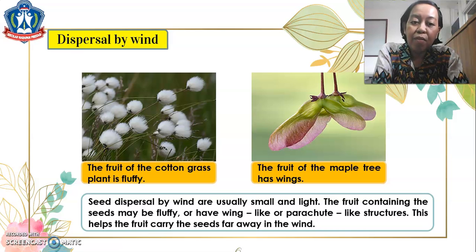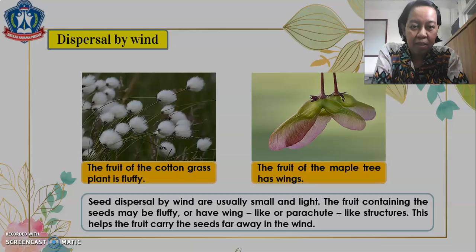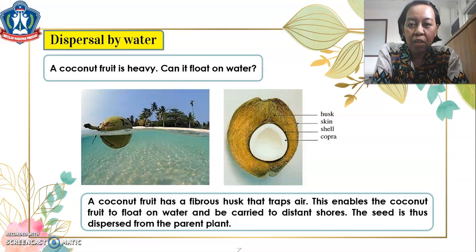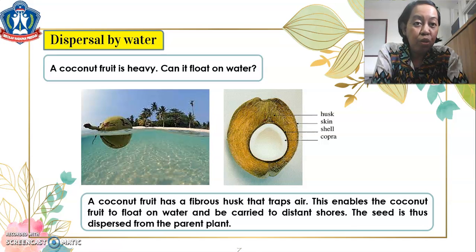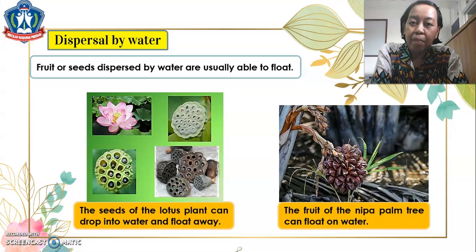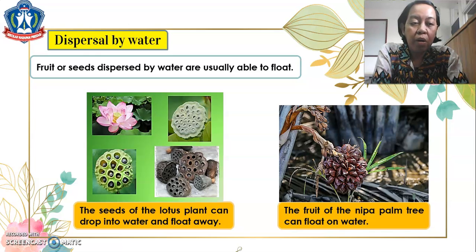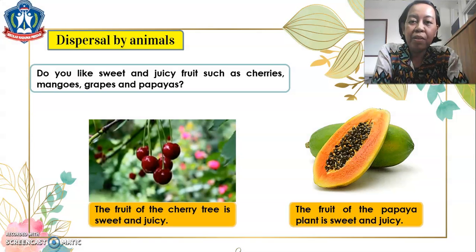Next is dispersal by water. Look at the coconut fruit — it is heavy, but can it float on water? Yes, it does! A coconut fruit has a fibrous husk that traps air, enabling it to float on water and be carried to distant shores, dispersing the seed from the parent plant. Other examples: fruits or seeds dispersed by water are usually able to float. The seeds of the lotus plant can drop into water and float away, and the fruit of the nipa palm tree can float on water too.